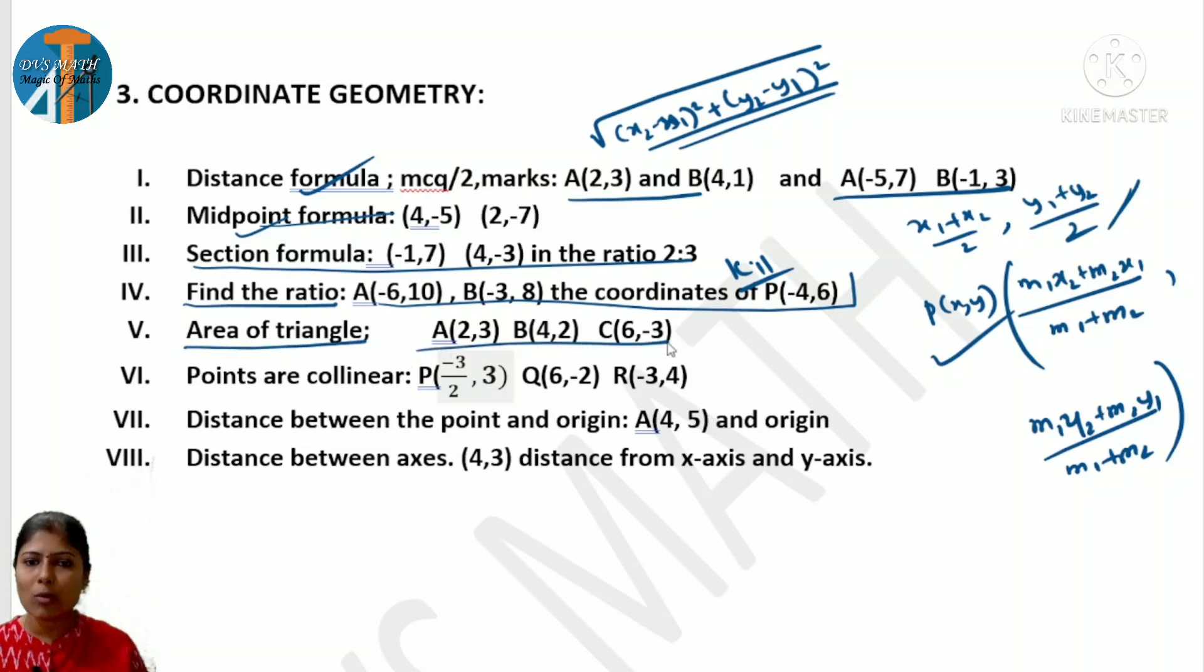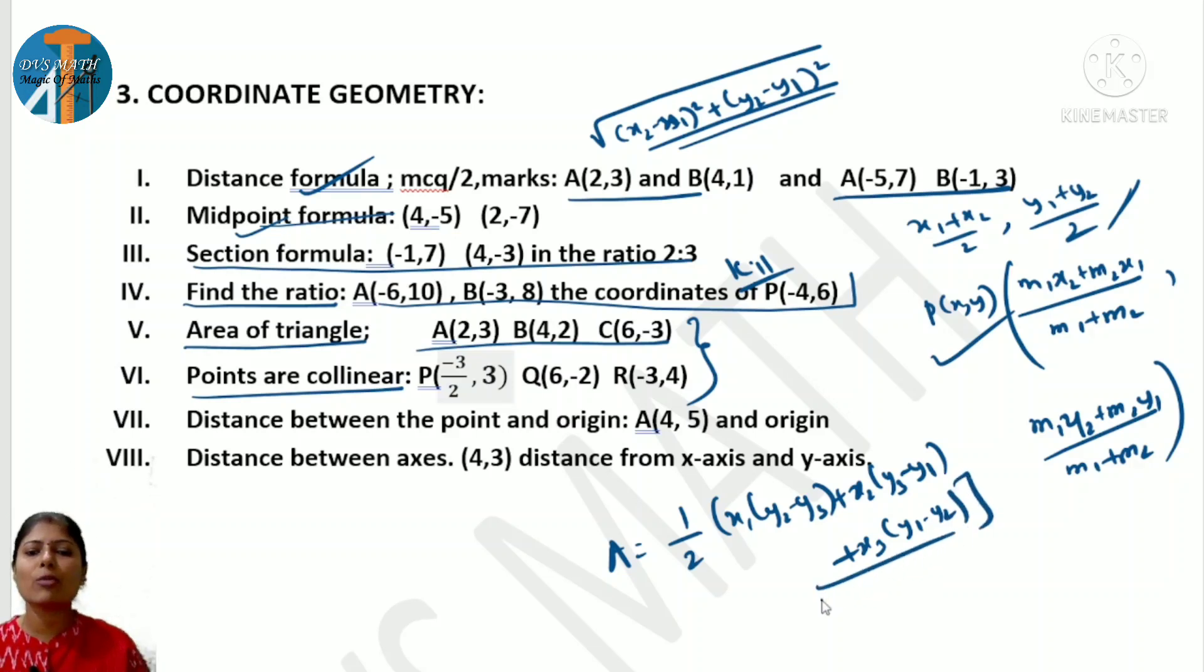Next, find the ratio. This I also explained in last session day 11. To find the ratio, you have to take it as k:1, and using the same section formula you find. Next, area of triangle - solve this. I will upload this in upcoming day 12. Area of triangle related problems, how to solve. Next, collinear points I will also explain. What is the formula? Area = ½[x1(y2-y3) + x2(y3-y1) + x3(y1-y2)]. Use this formula to find the area. When it's collinear, area becomes 0. So area should be 0.